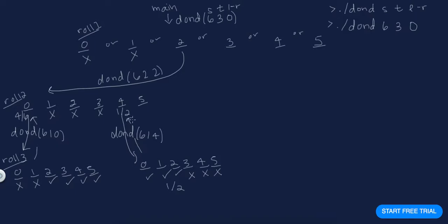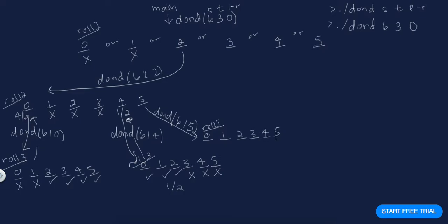What about rolling a five on roll two? That's DOND(6, 1 roll left, last roll = 5). On roll three I could roll zero through five. If I roll a five or four I lose; a three, two, one, or zero I win. So I return four out of six.